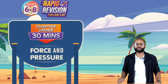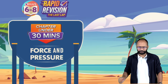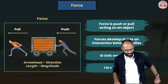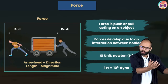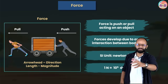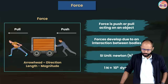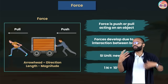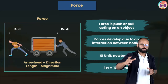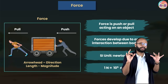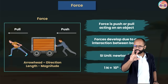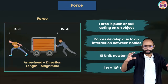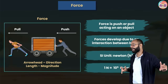Let's begin. Chapter is Force and Pressure. What is force? In simple words, force is either a push or a pull. Force develops due to interaction between bodies. Two bodies need to interact — interaction is a safe word: you're not saying touching, not saying not touching. They should interact — only then can force act.